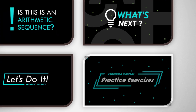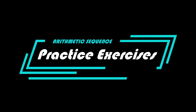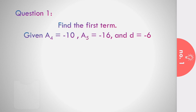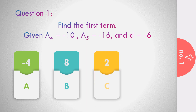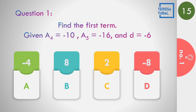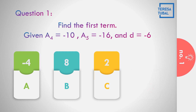Let us apply what you have learned — practice exercises. Question number 1: Find the first term given that a sub 4 equals negative 10, the fifth term is negative 16, and d equals negative 6. Options: a) negative 4, b) positive 8, c) positive 2, d) negative 8. Time's up. The answer is equal to positive 8.